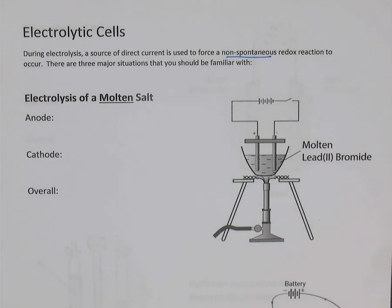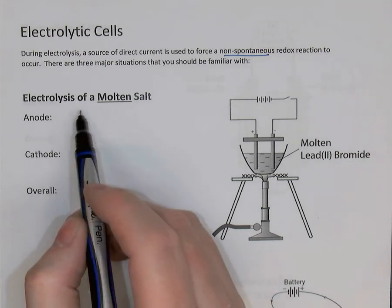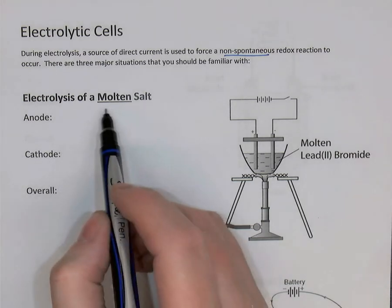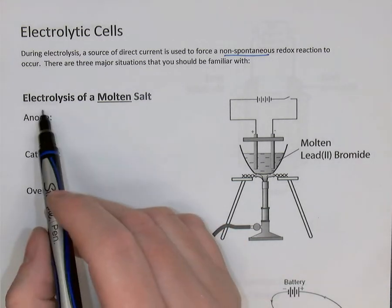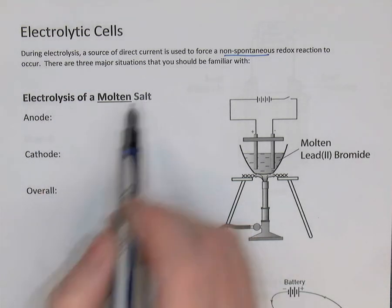There are three broad types of electrolysis that we need to be aware of. The first is perhaps the easiest: the electrolysis of molten salts.